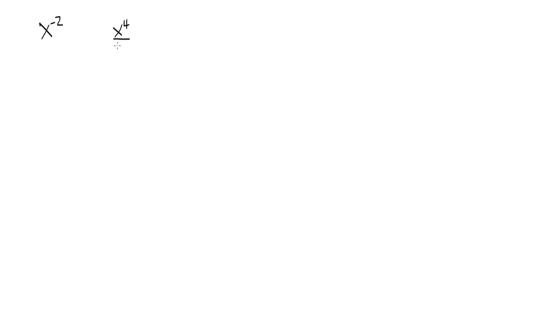What if you have x to the negative 2? Just like I did with zero powers, there's a couple of different ways for me to explain this. Let's do it this way first. If I have x to the fourth over x to the sixth, our quotient rule says that if you have a common base, you subtract the exponents when you divide. So this is x to the 4 minus 6, which is x to the negative 2.